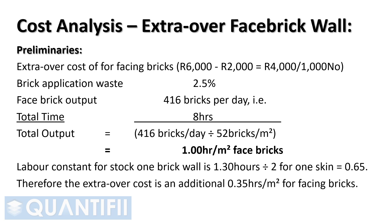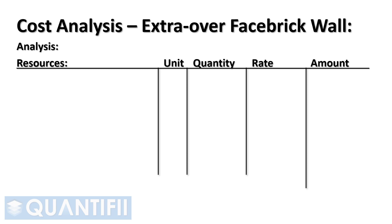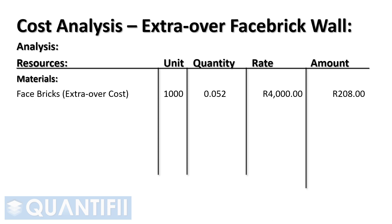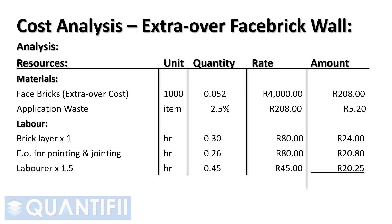We can add an additional 0.26 hours per square meter for pointing and joining bricks at the artisan's rate — the assumed calculation being 8 hours divided by 1,600 bricks divided by 52 bricks per square meter. Moving on to the face brick cost analysis: the extra over cost of face bricks is 4,000 Rand per thousand bricks multiplied by 52 bricks per square meter, which equals 208 Rand per square meter. We add 2.5% application waste. The extra over labor constant for an artisan is 0.30 hours plus 0.26 hours per square meter for pointing and joining. Lastly, we add the cost for 1.5 general laborers. This gives us a total cost of 278 Rand and 25 cents per square meter for the extra over cost of face brickwork.